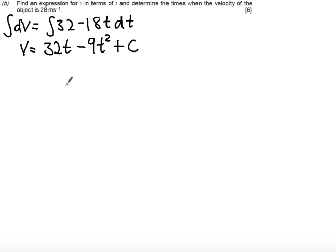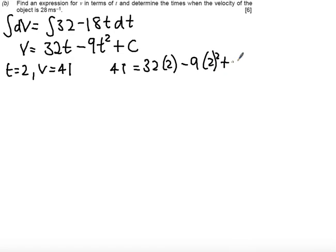The information in the question told us that when t equals 2, the velocity was 41. So we can use this now in order to find our constant. So I get 41 is equal to 32 times 2 minus 9 lots of 2 squared plus our constant. So 64 minus 36 will give us 28. So let's subtract that 28 from both sides. And what we get left with is that c equals 13.